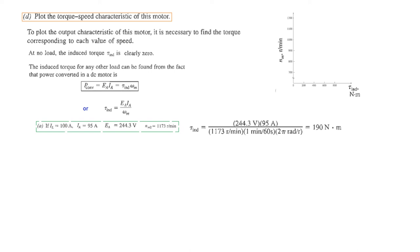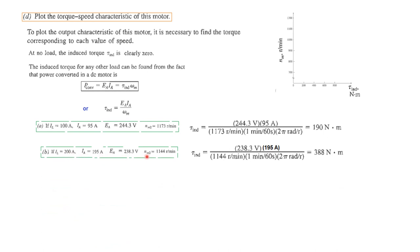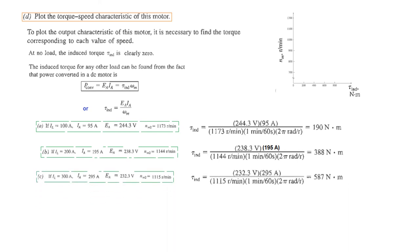For I_L = 100 A: E_A = 244 V, I_A = 95 A, N_m = 1173 RPM, so ω_m = 2π × (1173/60). T_induced = (244 × 95) / ω_m ≈ 190 N·m. For I_L = 200 A: T_induced ≈ 388 N·m. For I_L = 300 A: T_induced ≈ 587 N·m.